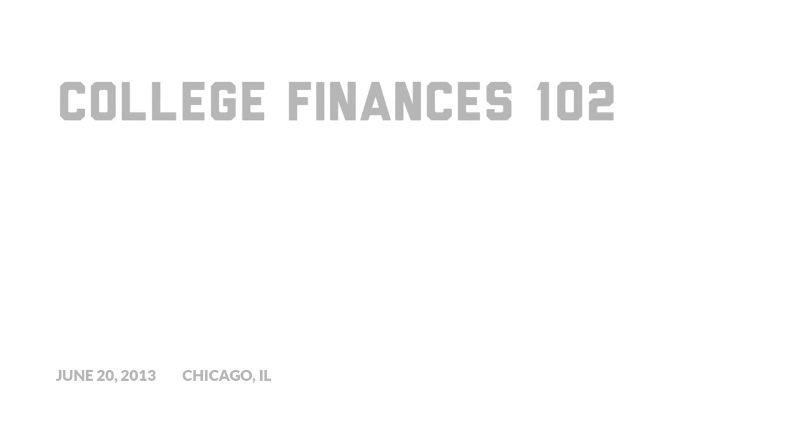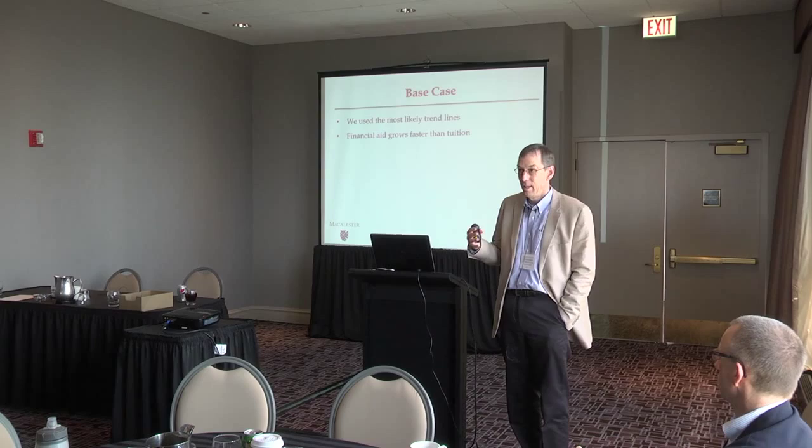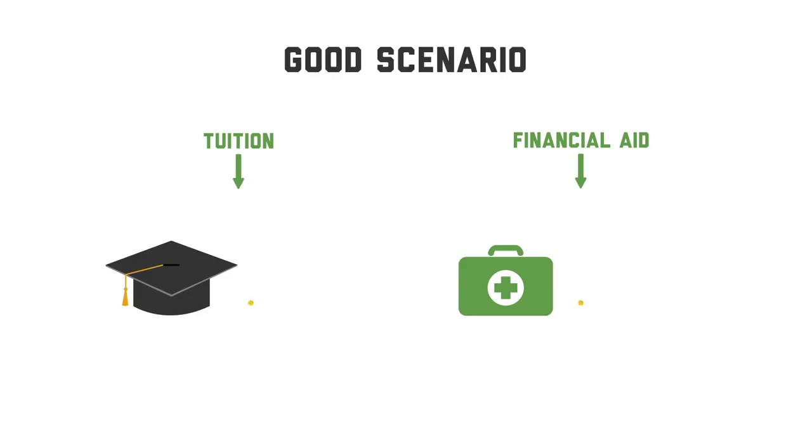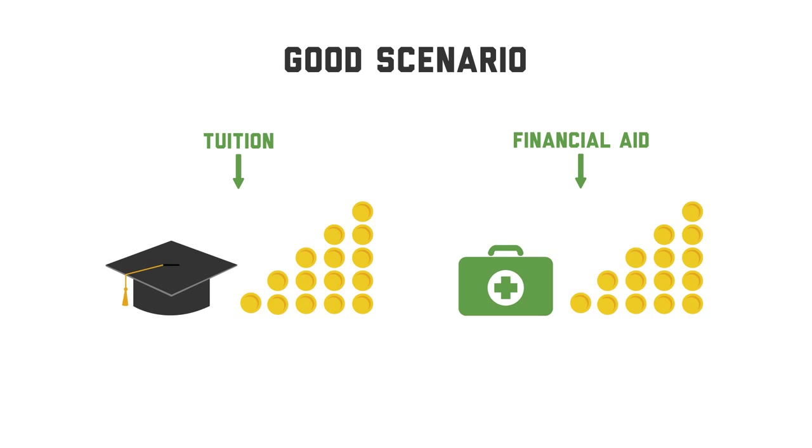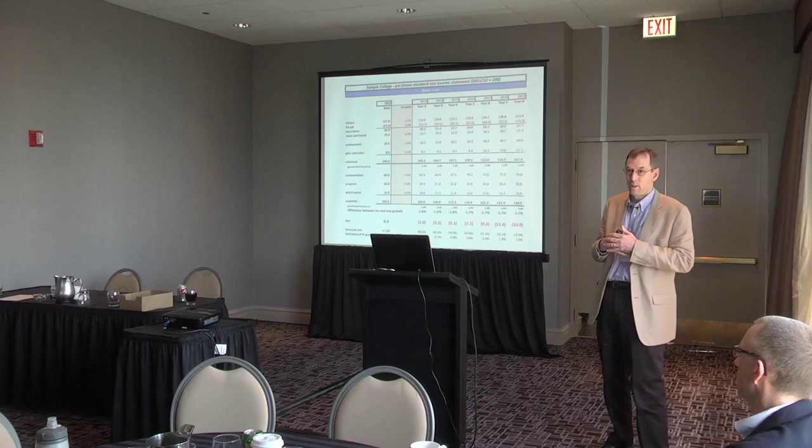What we need to do is find an operating structure that really works. If our price is rising faster than household income — and household income has been pretty flat — then the only way we'll be able to meet expected family contributions is to find some way to do it with financial aid. If we can construct a model where tuition goes up 4% and financial aid goes up 4%, that would be a good thing. But almost all of us, if you look at those discount rates, have seen our financial aid demand rise faster than our increases in tuition.